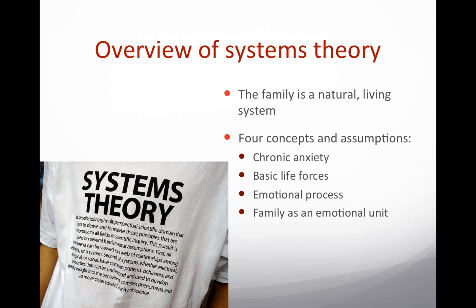An overview of systems theory: the basic concept is that the family is a natural living system, and there are four concepts and assumptions that drive the theory. The first is chronic anxiety — the source of one's anxiety is a reaction to a disturbance in the balance of a relationship system. The theory distinguishes acute anxiety, which is a response to a real threat of shortened duration, from chronic anxiety, which is a response to an imaginary threat and is more enduring. It is chronic anxiety that helps determine when and where dysfunction lies within the family system.